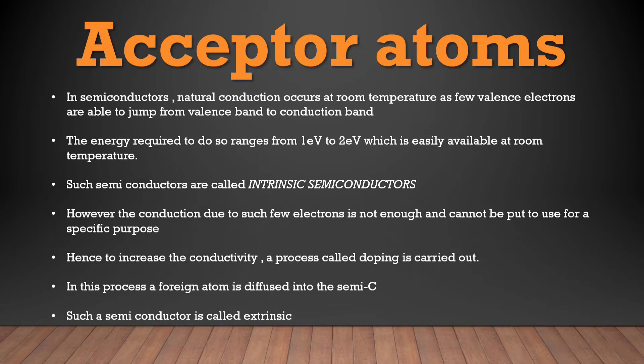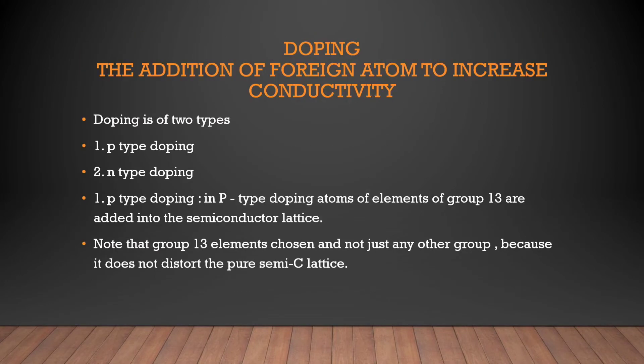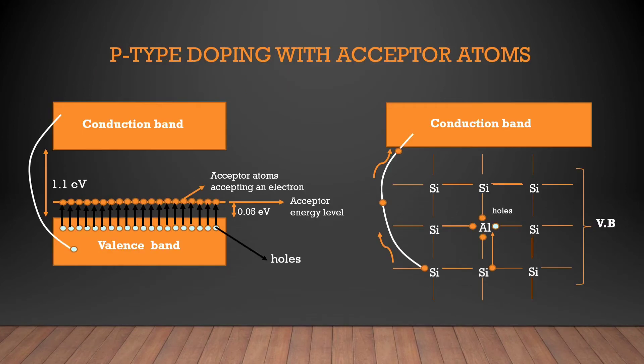However, the conduction due to such few electrons is not enough and cannot be put to use for a specific purpose. Hence, to increase the conductivity, a process called doping is carried out. In this process, a foreign atom is fused into the semiconductor. Doping is of two types: p-type doping and n-type doping. In p-type doping, atoms of elements of group 13 are added into the semiconductor lattice.